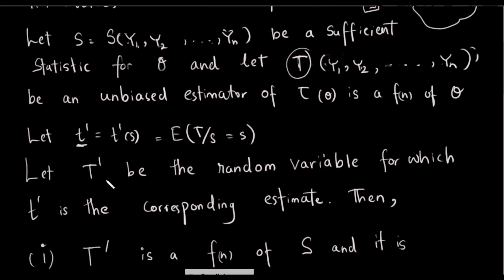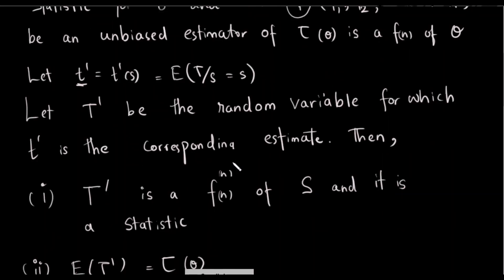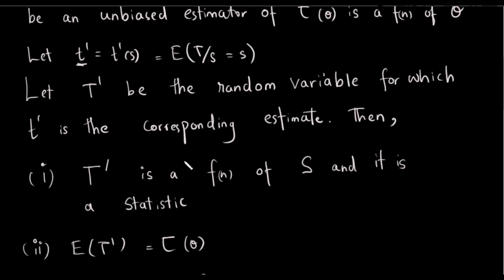If we have capital T-dash, it is a function of capital S and it is a statistic. This means we write T-dash as a random variable and as an estimate. We can write T-dash as a function of the sufficient statistic.